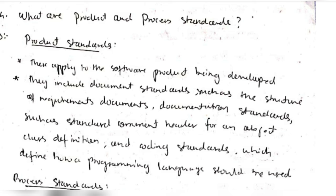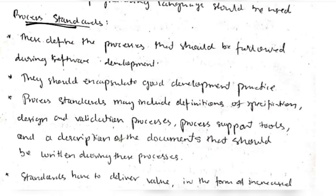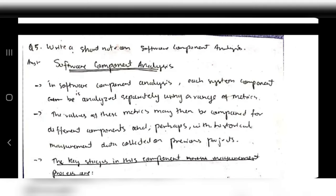Product standards define the standards a product must follow to ensure it is good. Process standards define the standards the process must follow while developing the product. Software component analysis means selecting each component of the software product and checking its quality.